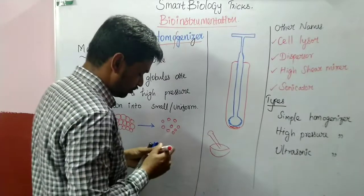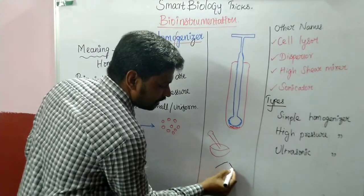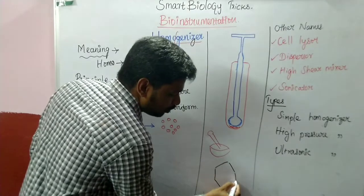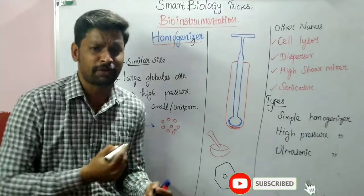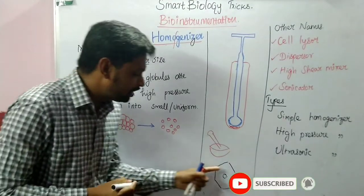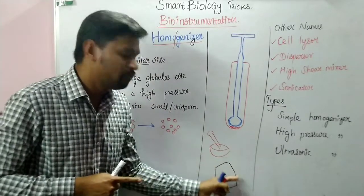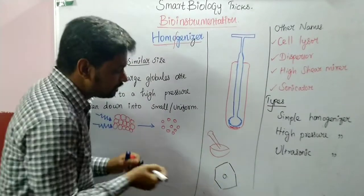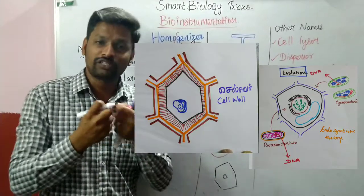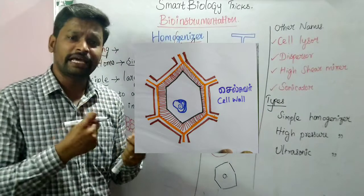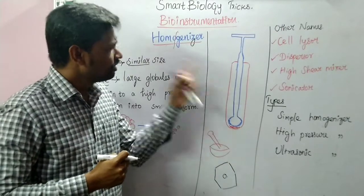The cell wall must first be broken down. Plant cells contain a cell wall, so it needs to be broken down to release cell organelles from inside. The overall cell is tightly packed, and when this tight packing is loosened or relaxed, we use the homogenizer.